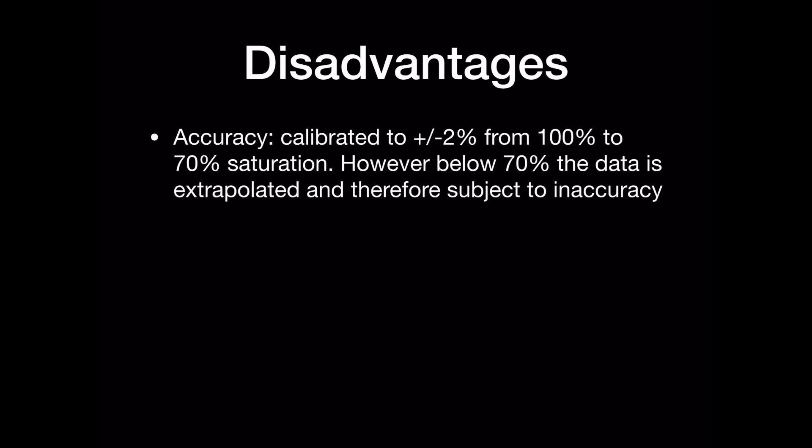There are some disadvantages however. The pulse oximeter was calibrated to plus or minus 2% from 100% saturations down to 70% saturations in healthy volunteers. However, it was felt unethical to measure saturations lower than 70% and therefore the data is extrapolated and subject to inaccuracy at lower levels.